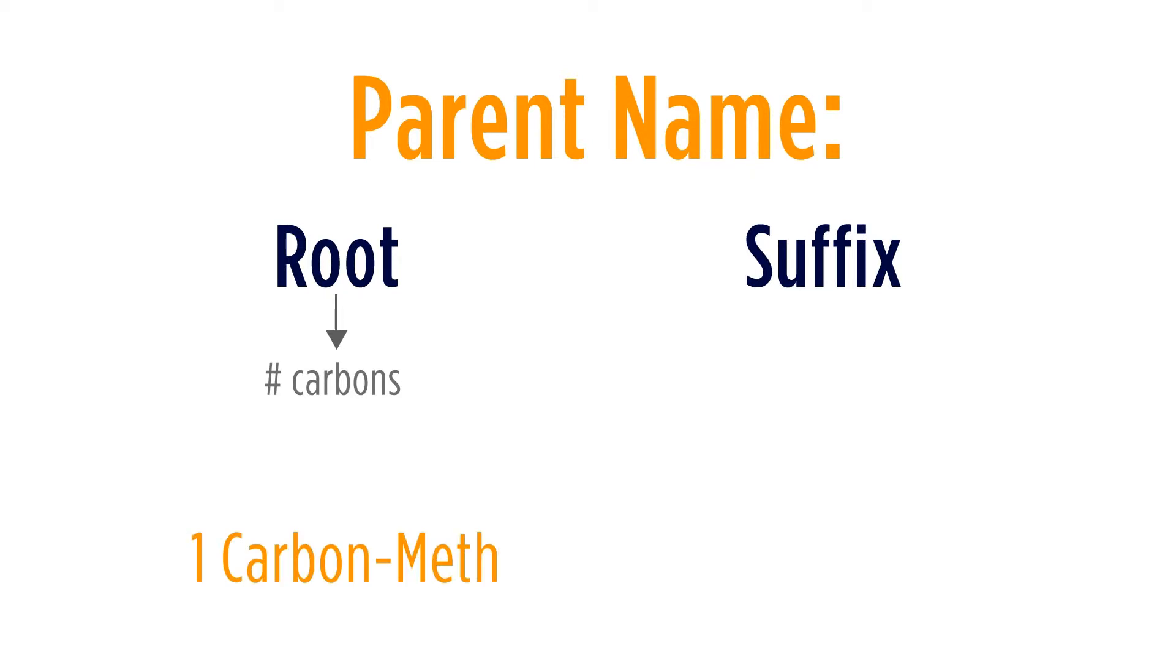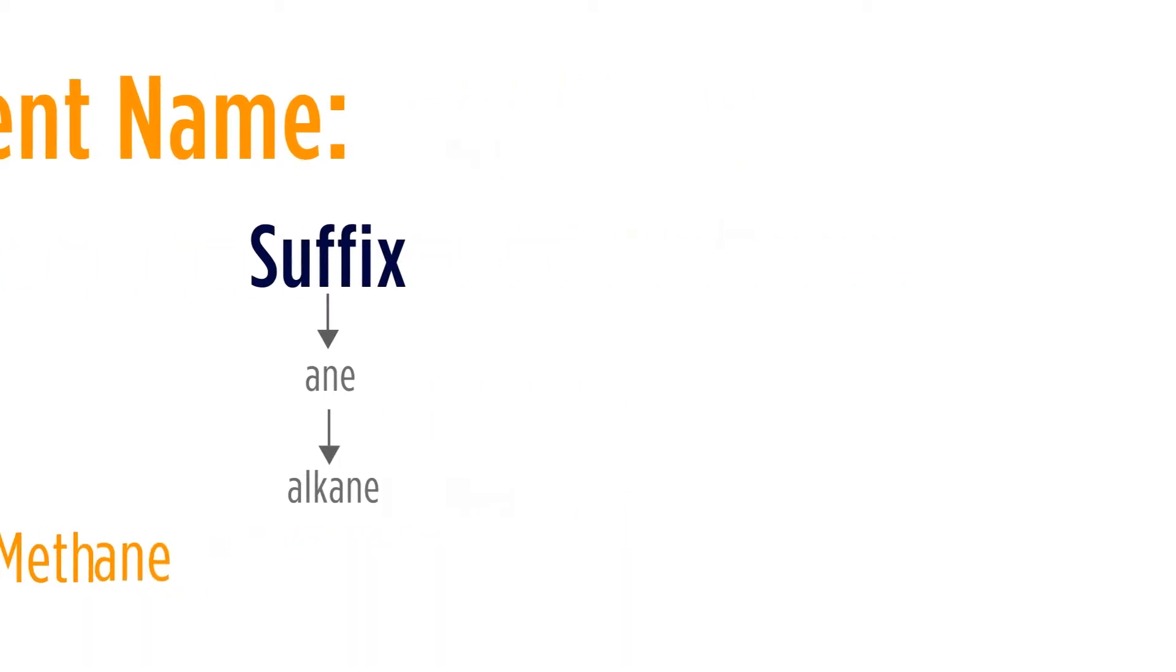For the parent name there's two parts: the root and the suffix. The root names are based on the number of carbons. If we look at a one carbon group, the root name would be meth. Since most of what we'll be looking at is going to be alkanes, we're going to add the suffix ane. The suffix gives us the functional group. So a one carbon alkane would be meth for the root, and ane since it's an alkane, therefore methane.